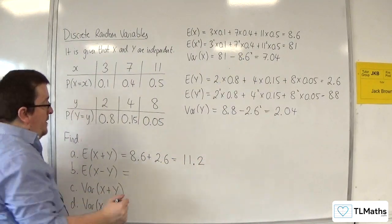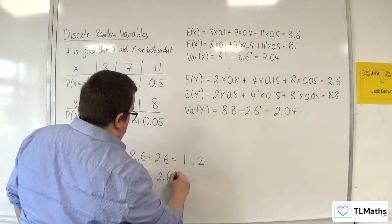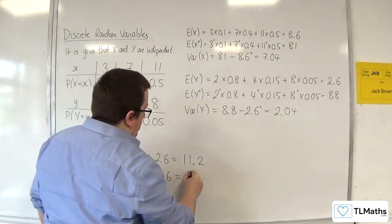So E of X take away Y is going to be E of X take away E of Y. So that will just be 6.